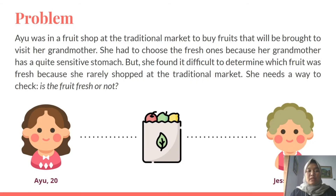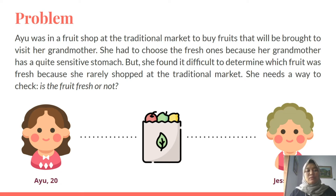But first, let me tell you a story. Ayuh was in a fruit shop at a traditional market to buy fruits to bring when visiting her grandmother. She had to choose the fresh ones because her grandmother has a quite sensitive stomach, but she found it difficult to determine which fruit was fresh because she rarely shopped at a traditional market. She needs a way to check: is the fruit fresh or not? We often experience this kind of situation in our daily life, and from here we got the idea to create a fresh and rotten fruit predictor.